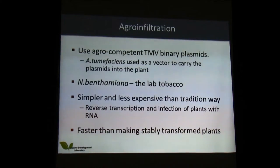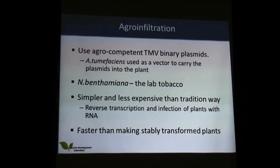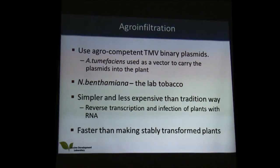To introduce the virus or vaccine into plants, we used a binary vector called pTurbo, which combines both the Ti plasmid of Agrobacterium and also contains the genome for tobacco mosaic virus. Once it gets into the plants it is able to express the TMV genome which then spreads through the plant. That process is called agro-infiltration. Agro-infiltration has been shown to be cheaper than the previous method of rubbing RNA of tobacco mosaic virus onto leaves, since reverse transcription to get that RNA is very expensive.